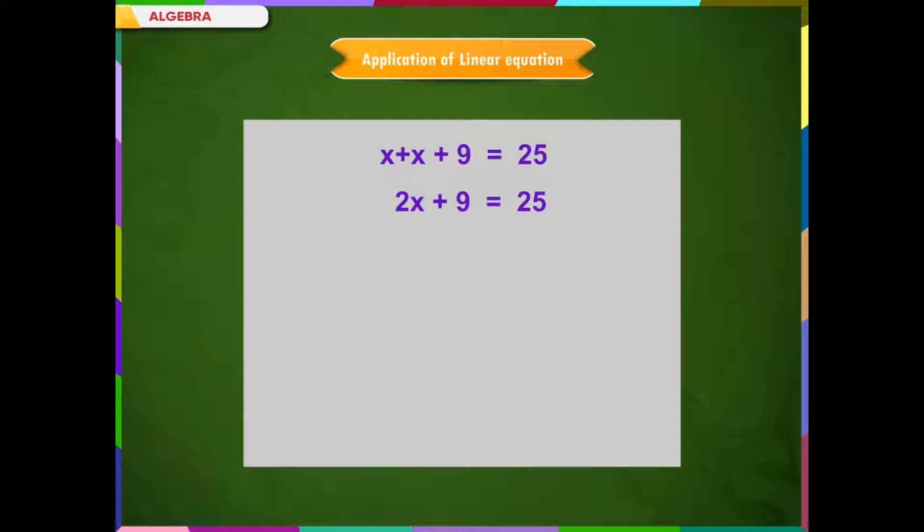x plus x plus 9 is equal to 25. On transposing 9 to the right-hand side, it changes to minus 9. Therefore, 2x is equal to 25 minus 9. 2x is equal to 16. x is equal to 16 divided by 2. x is equal to 8.